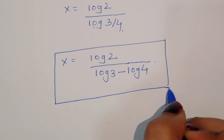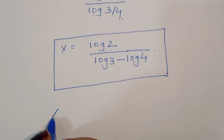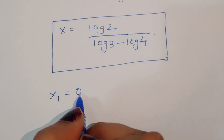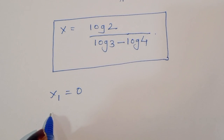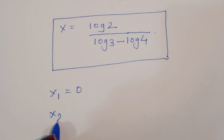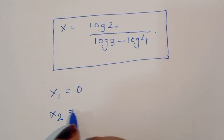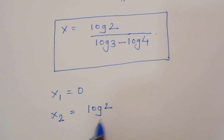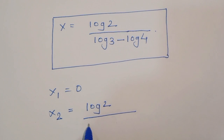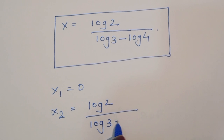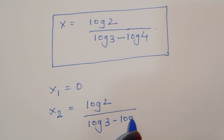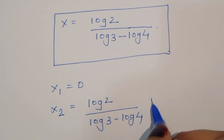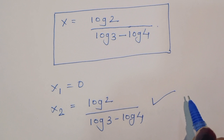So we got two values of x. The first solution is x₁ equals 0, and the second solution is x₂ equals log 2 divided by (log 3 minus log 4). This is the complete solution. Thank you.